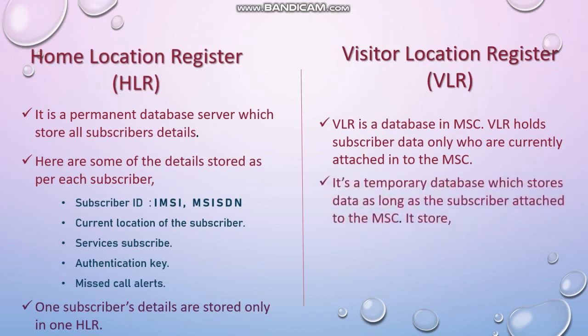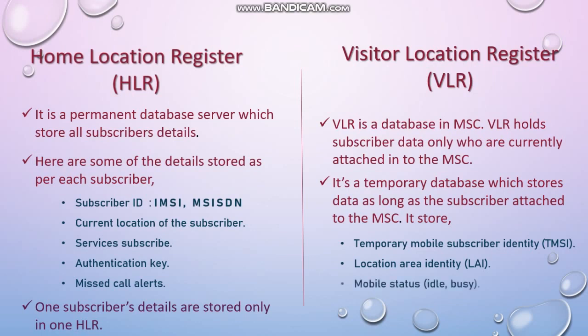Here are some details which will be updated in VLR. Temporary Mobile Subscriber Identity, TMSI, which is a temporary ID — it will change frequently so no one will be able to track by its ID. Location Area Identity is a number for the area defined by the telecom operator; it identifies which area you are in. VLR also keeps a record of the current mobile status, such as idle or busy mode.